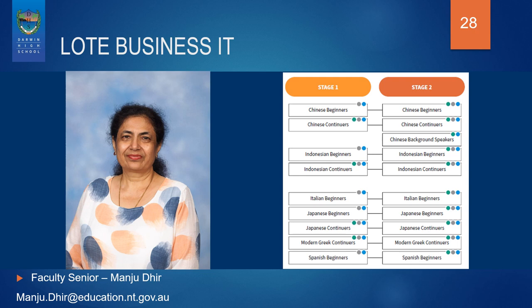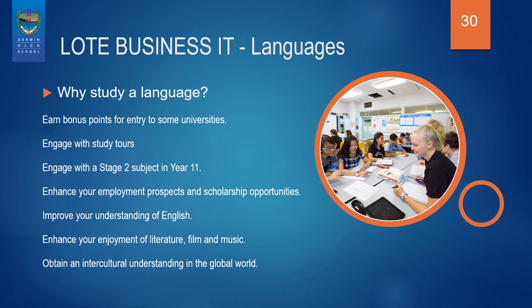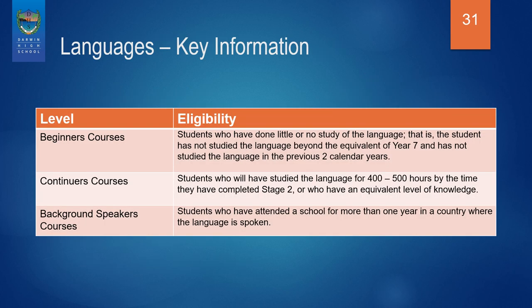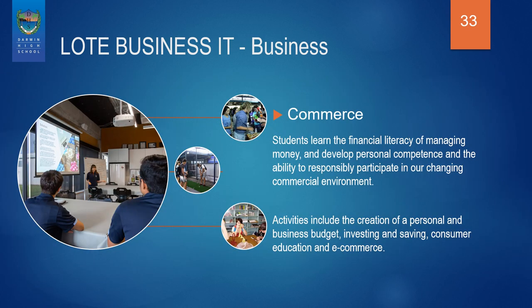Languages offers six options: Chinese, Japanese, Indonesian and Modern Greek at both Beginner and Continuer level, and Italian and Spanish at Beginner level. Please pause the video at this point to see the eligibility criteria for the different levels of languages. Business has one offering in semester one: Commerce. Commerce encourages students to learn the financial literacy of managing money and develop personal competence in the ability to responsibly participate in our changing commercial environment.